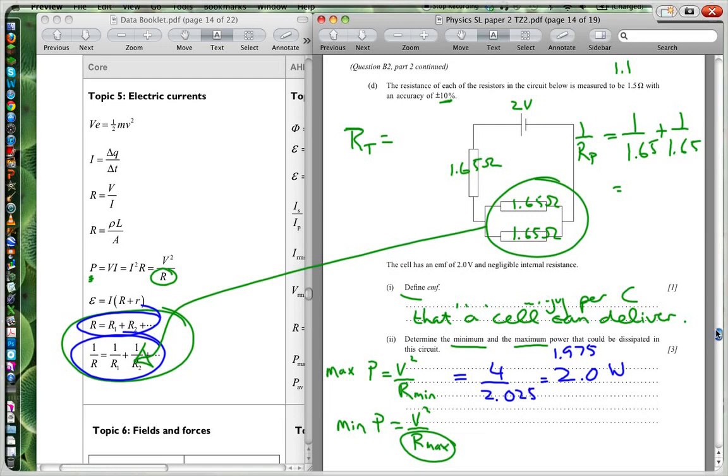1.65 inverse. So I times that by 2 because there's 2 of them. And then I find for RP, I find the inverse of that. So I find the inverse of that and I get 0.825. Just check and see if you can get that.